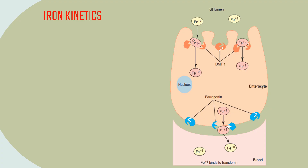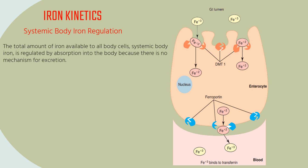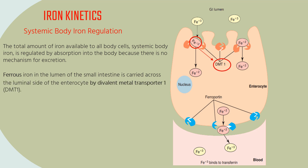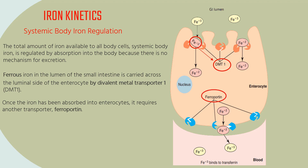Iron kinetics — systemic body iron regulation. The total amount of iron available to all body cells, systemic body iron, is regulated by absorption into the body because there is no mechanism for excretion. Ferrous iron in the lumen of the small intestine is carried across the luminal side of the enterocyte by divalent metal transporter 1. Once absorbed into enterocytes, it requires another transporter, ferroportin, to carry it across the basolateral enterocyte membrane into the bloodstream.